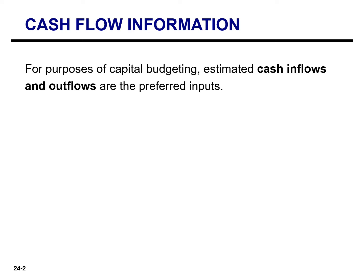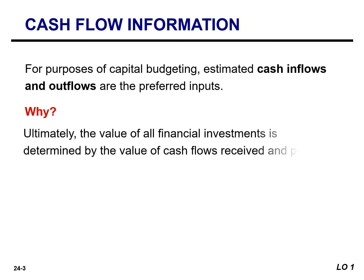Most of these methods use cash flow numbers rather than accrual accounting. Remember from your financial accounting course that accrual accounting records revenue and expenses rather than cash inflows and cash outflows. In fact, revenues and expenses measured during a period often differ significantly from their cash flow counterparts. For purposes of capital budgeting, estimated cash inflows and outflows are the preferred inputs, because ultimately the value of all financial investments is determined by the value of cash flows received and paid.